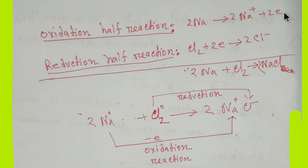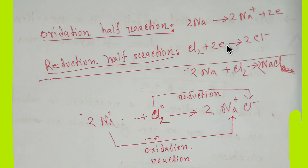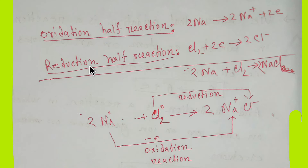Observe that if the oxidation half-reaction does not exist, you will not get the reduction half-reaction, because electrons come from the oxidation reaction to the reduction reaction. If the oxidation reaction doesn't happen, you won't get the reduction reaction. So both reactions — the redox reaction — happen simultaneously.